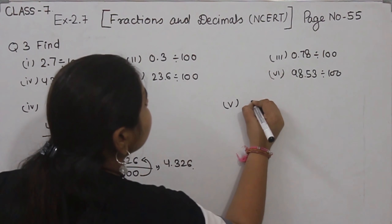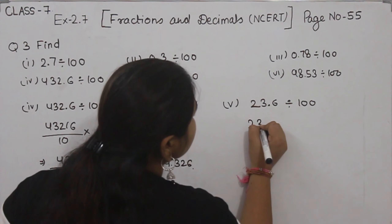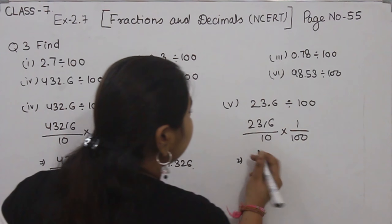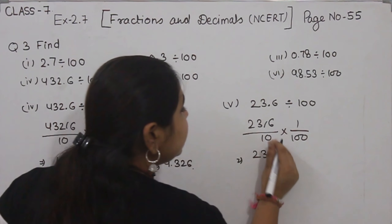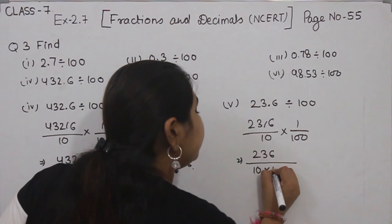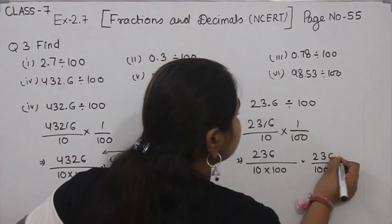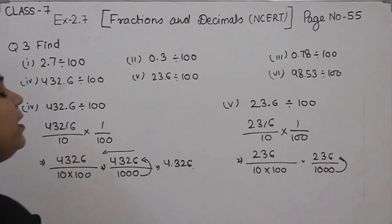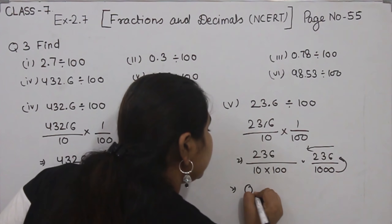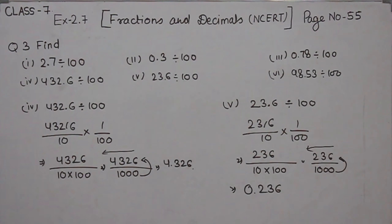Now Part 5: 23.6 divided by 100. First, we are going to remove the decimal. Multiply 1 by 100. Now we are going to multiply 236 by 1. The answer is 236 in the numerator. 10 multiplied by 100 is 1000. So, 236 divided by 1000. We are going to convert these zeros to decimal, putting the decimal from right to left after 3 digits. So the answer is 0.236. This is Part 5.